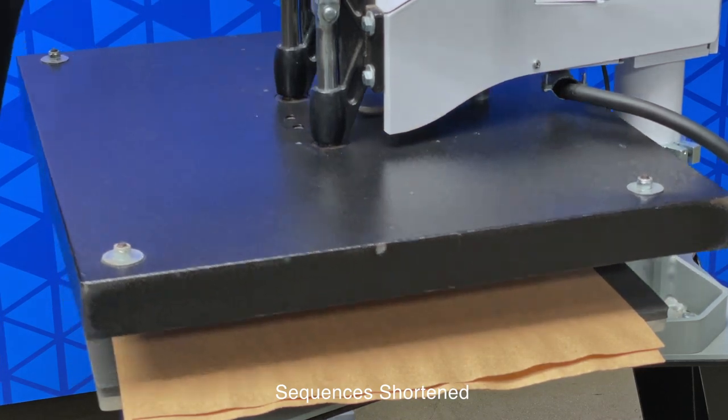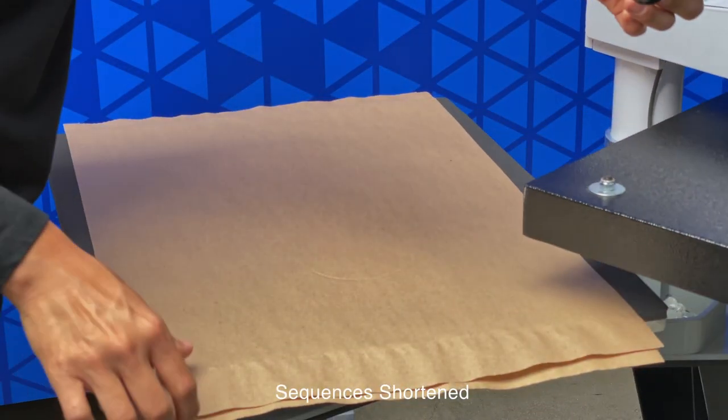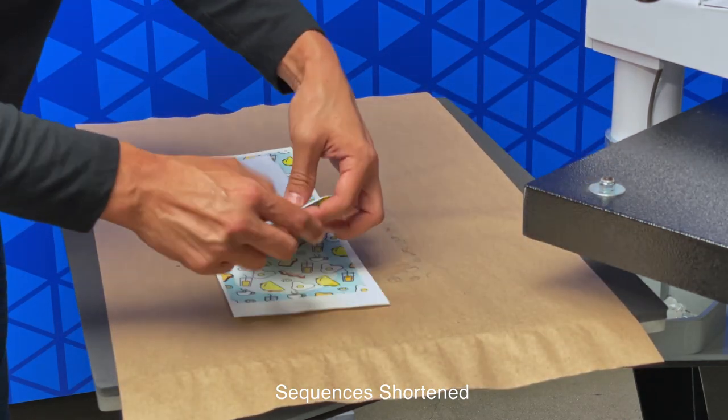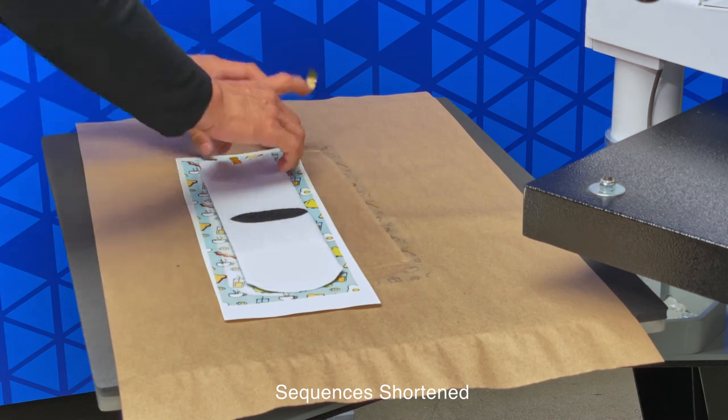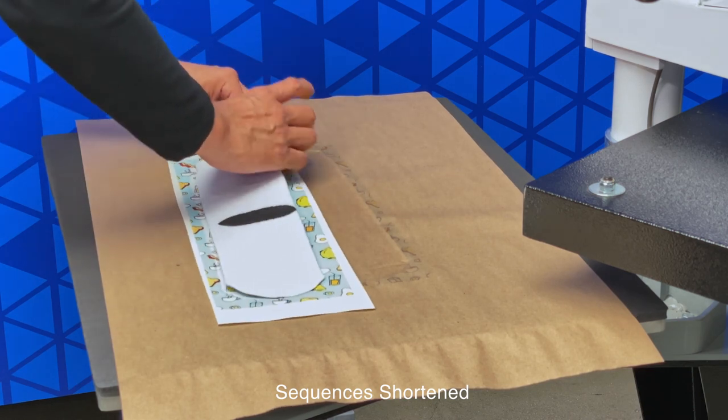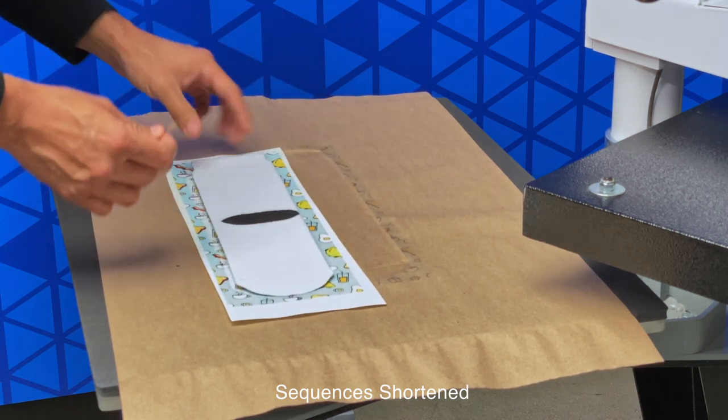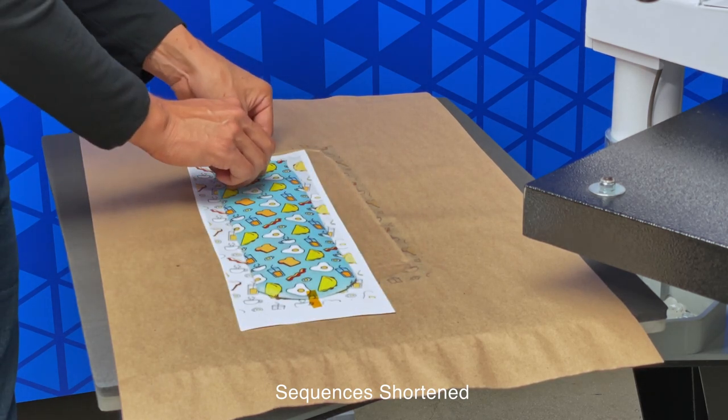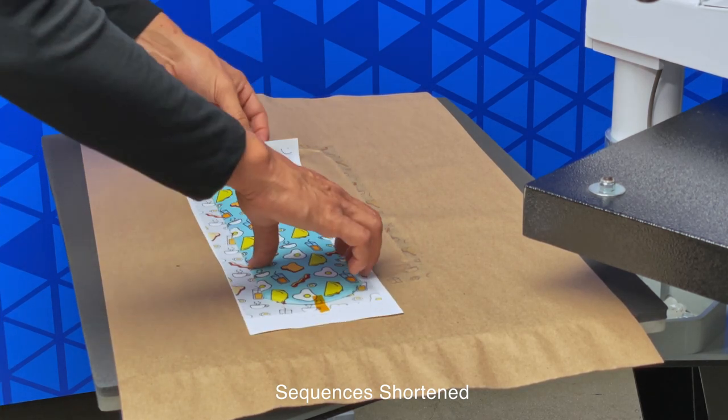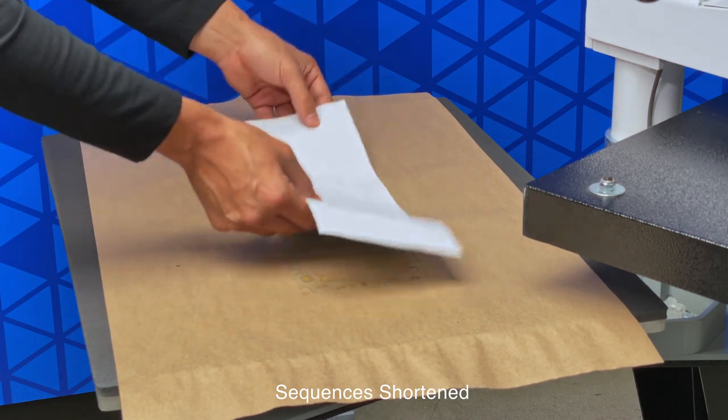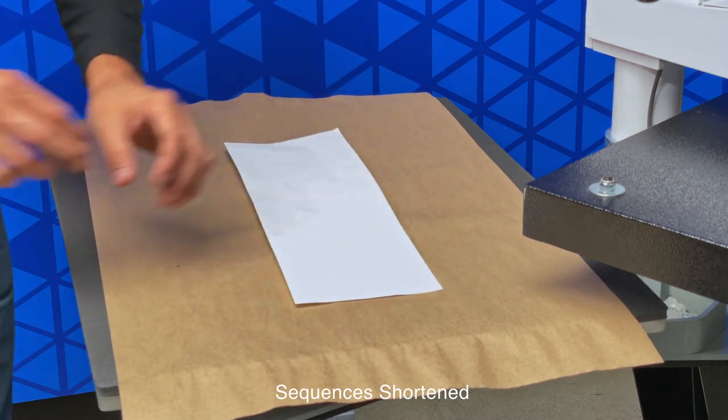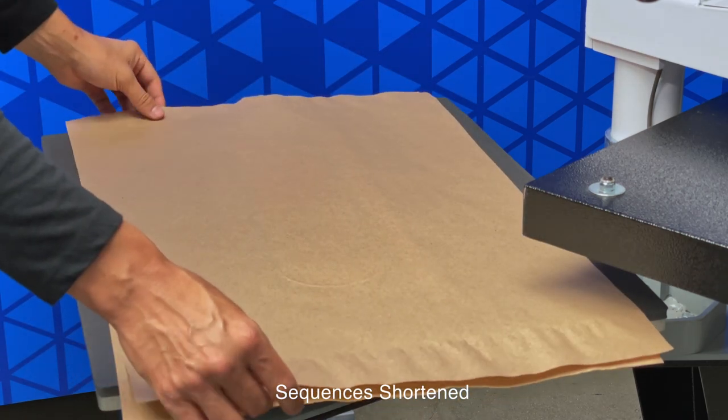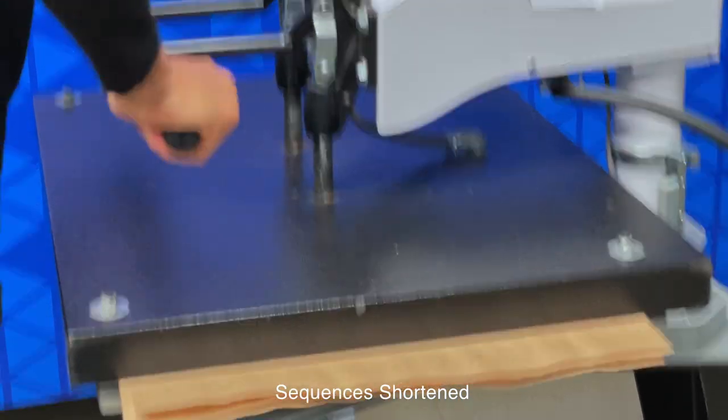When the press is done, lift it up slowly. We'll remove our craft paper, we'll flip our item over, and we're going to remove this first side of paper so we can attach our second side of paper. We'll tape this side on just like we did on the first side. We will flip it back over so that we have paper on top. Grab our sheet of craft paper and begin pressing the second side.